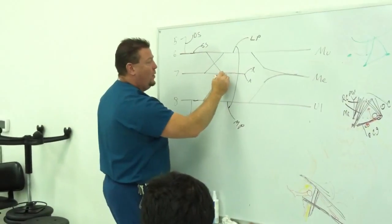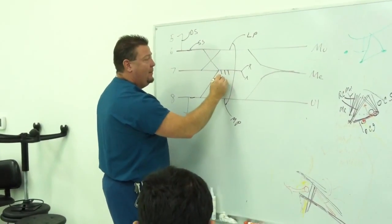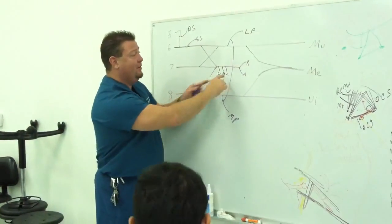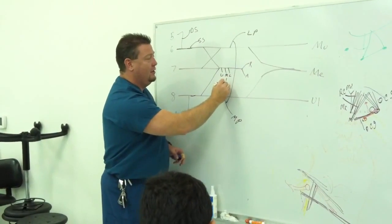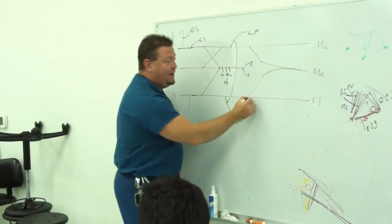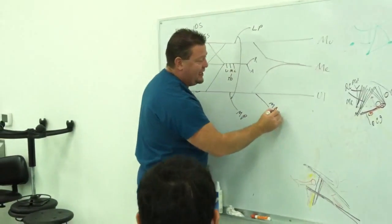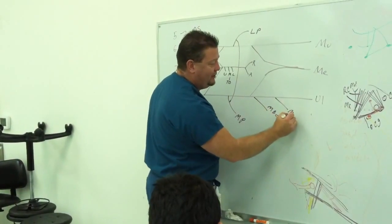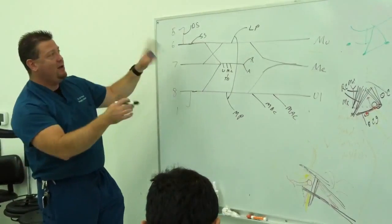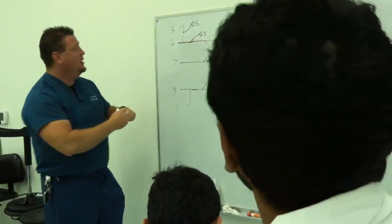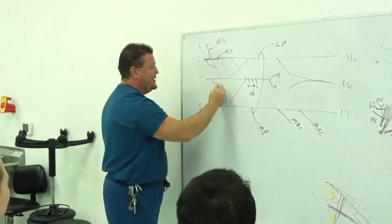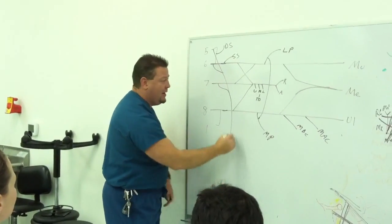Then, coming off here: one, two, three — upper, middle, and lower subscapular nerves. The middle subscapular nerve happens to be thoracodorsal. But the upper, middle, and lower subscapular nerves. Then off here, the medial brachial cutaneous, and after that the medial antebrachial cutaneous. And so now I'm adding all this extra stuff on. I can add on another one here — coming off C5, running all the way down the body, adding C6 and C7, is long thoracic.